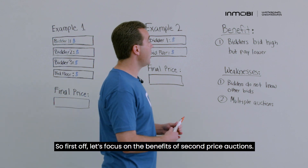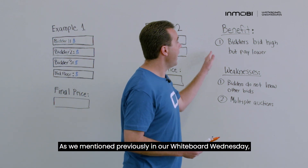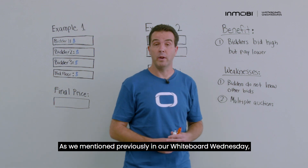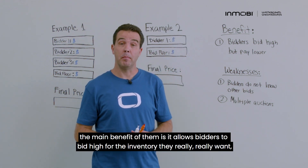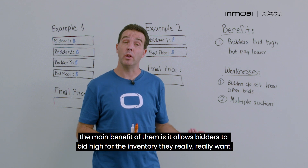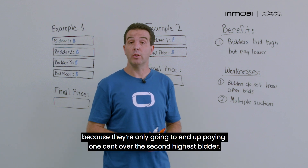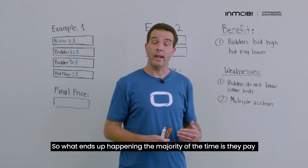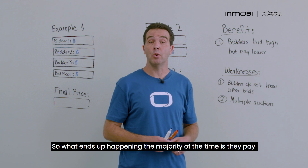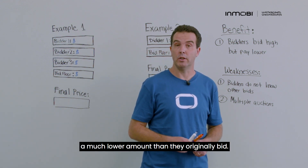Let's focus on the benefits of second price auctions. As we mentioned previously, the main benefit is it allows bidders to bid high for the inventory they really want with relatively low risk that they will end up paying that amount, because they're only going to end up paying one cent over the second highest bidder. So the majority of the time they pay a much lower amount than they originally bid.